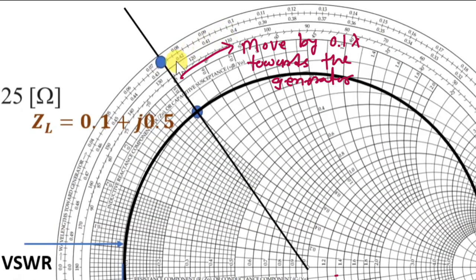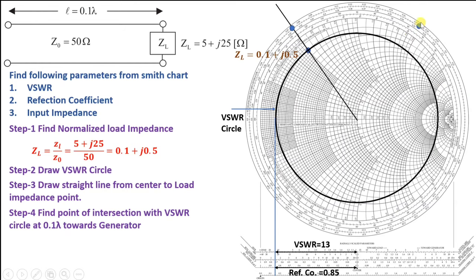We mark the point at 0.1 lambda distance in the clockwise direction toward the generator, between 0.17 and 0.18 on the scale. Then we stretch a line from this new point back to the center, and find its intersection with the VSWR circle. That intersection point gives us the normalized input impedance.